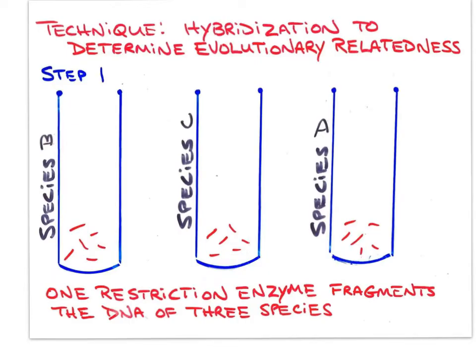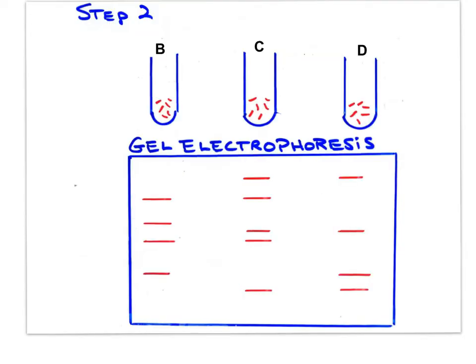Over the next four slides, let me show you a technique using gel electrophoresis to determine the evolutionary relatedness of three species: B, C, and D. The technique has the DNA of each species cut into fragments using the exact same restriction enzyme, and the technique will use a probe or a primer. The DNA of species B, C, and D has been cut using a single restriction enzyme. The fragments of each species are run in separate lanes on a gel, and the banding pattern seen here is the result.